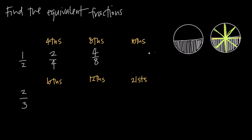Instead of drawing a picture every time, how do we use math to find equivalent fractions? These three are all equivalent fractions, but what if we want the equivalent fraction for tenths? We want to figure out how many tenths equal one half. Mathematically, we say one half equals some number over ten. We look at the denominators: what do we multiply two by to get ten? Ten divided by two is five, so we multiply the denominator by five and also multiply the numerator by five. One times five equals five, so the equivalent fraction in tenths is five over ten — one half equals five over ten.